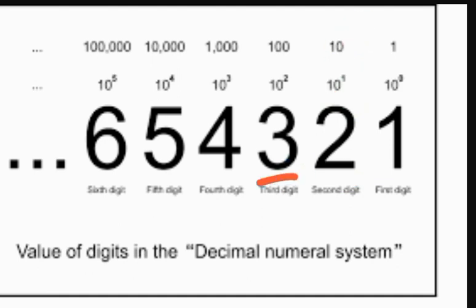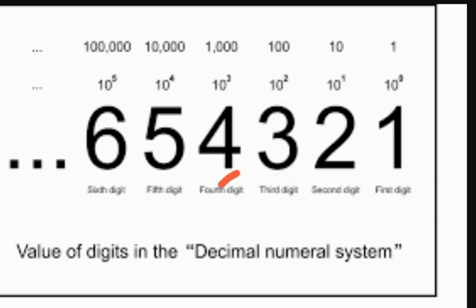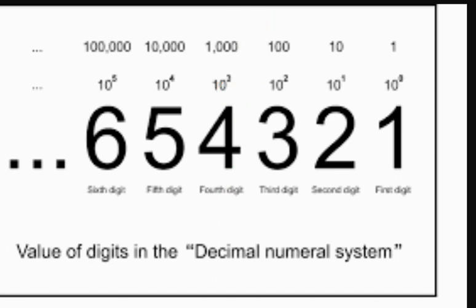The digit 3 — its value is 10 raised to power 2, which is equal to 100. The digit 4 — its value is 10 raised to power 3, which is 1000. In this way you can write or represent any decimal number.